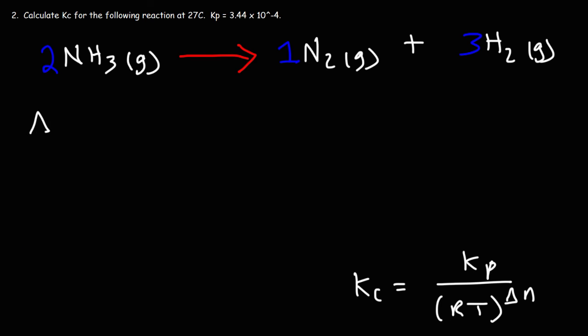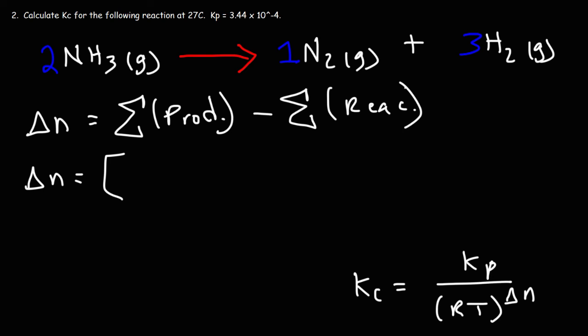So at this point, we can calculate delta N, which is going to be the sum of the coefficients of the products minus the sum of the coefficients associated with the reactants. So on the product side of the chemical reaction, which is the right side, the coefficients are 1 and 3. For the reactant side, it's 2. 1 plus 3 is 4. 4 minus 2 is 2. So delta N in this problem is equal to 2.